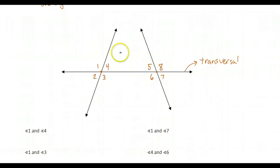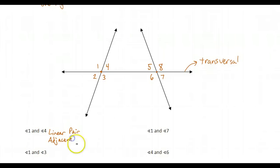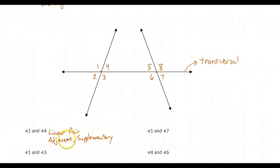So let's describe the kinds of angles we have. Angle one and angle four form a linear pair. Since they form a linear pair, they have to be adjacent — right next to each other — and supplementary, summing to 180 degrees. Linear pair was covered way back in chapter one, but we still have to remember that definition and what it means.